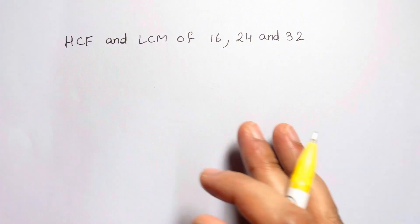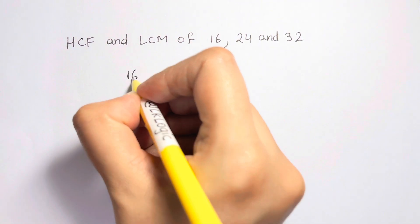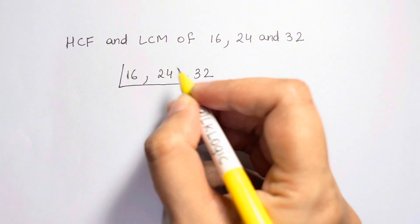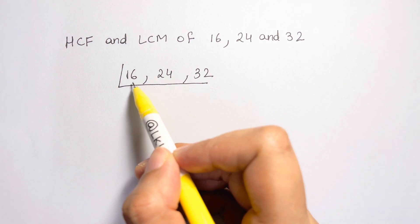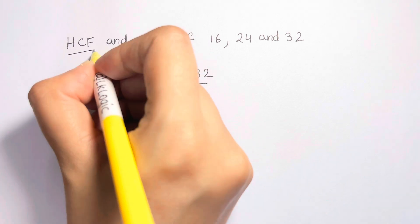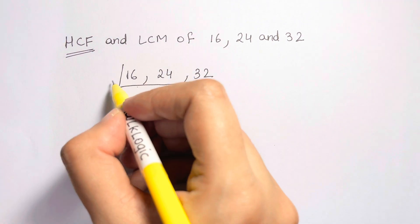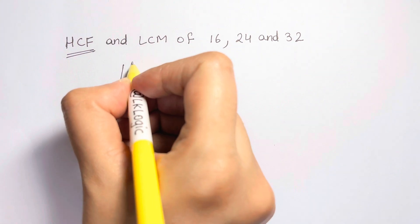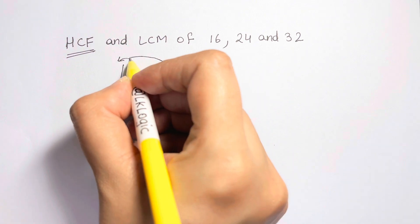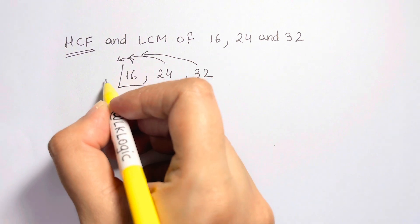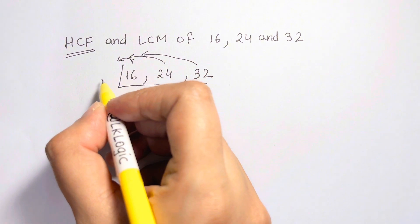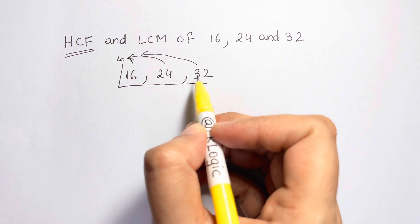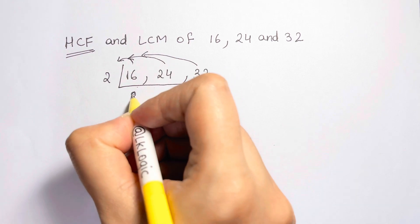Now I'll show you the easiest trick to find HCF and LCM so you don't get confused. Write the numbers together — 16, 24, and 32 — and draw one shared ladder. For HCF, every number you choose must divide all three numbers. Starting with the smallest prime, 2: 16 ÷ 2 = 8, 24 ÷ 2 = 12, 32 ÷ 2 = 16. All divisible.